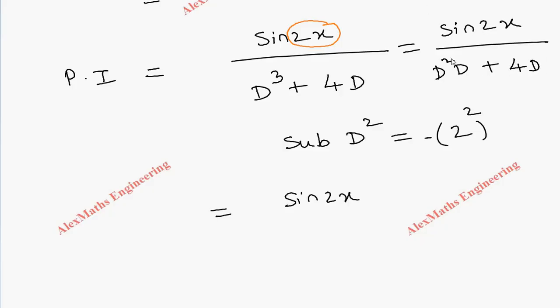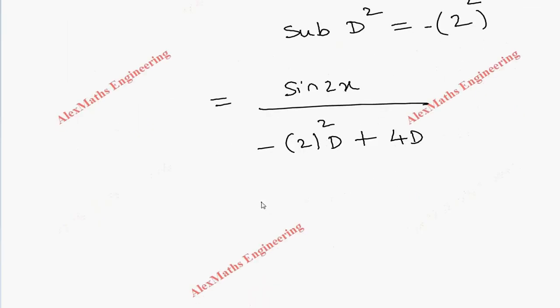So sin(2x) by -2² into D + 4D. So sin(2x) by, this is -4, so -4D + 4D. Denominator becomes 0.